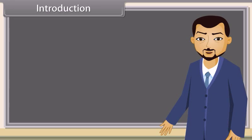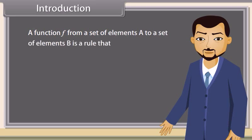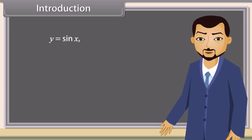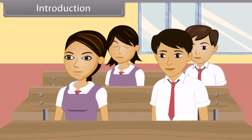Before we define the inverse trigonometric functions, we need to think about exactly what we mean by a function. A function f from a set of elements A to a set of elements B is a rule that assigns to each element x in A exactly one element f(x) in B. y = sin x, y = cos x, and y = tan x are functions in this sense, with A and B being sets of real numbers.